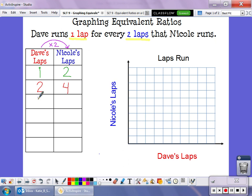If Dave runs three laps, again, we're going to do Dave's laps times two means Nicole will run six laps. If Dave runs four laps, four times two means Nicole runs eight laps. If Dave runs five laps, five times two means Nicole has run ten laps.